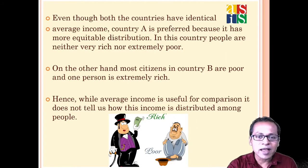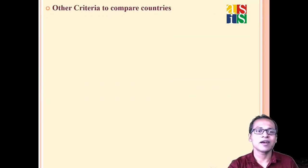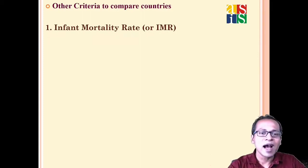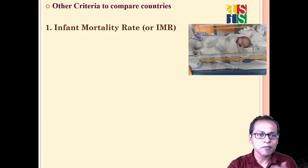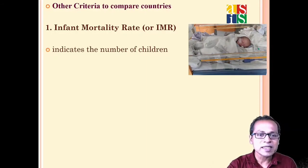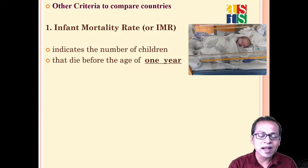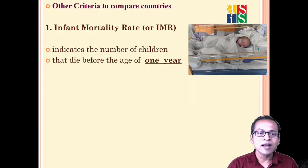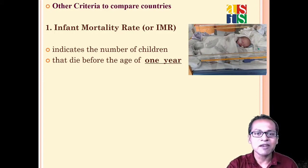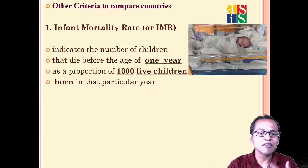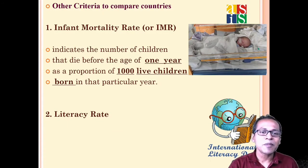Another criterion to compare countries is IMR — Infant Mortality Rate. Out of medical complications, many newborn babies die within a year. The number of deaths per thousand newborn children is what IMR measures. If IMR is higher, it means the country's health infrastructure is weaker. If IMR is lower, very few babies are dying within a year, indicating good health infrastructure. So IMR indicates the level of health infrastructure in a country.